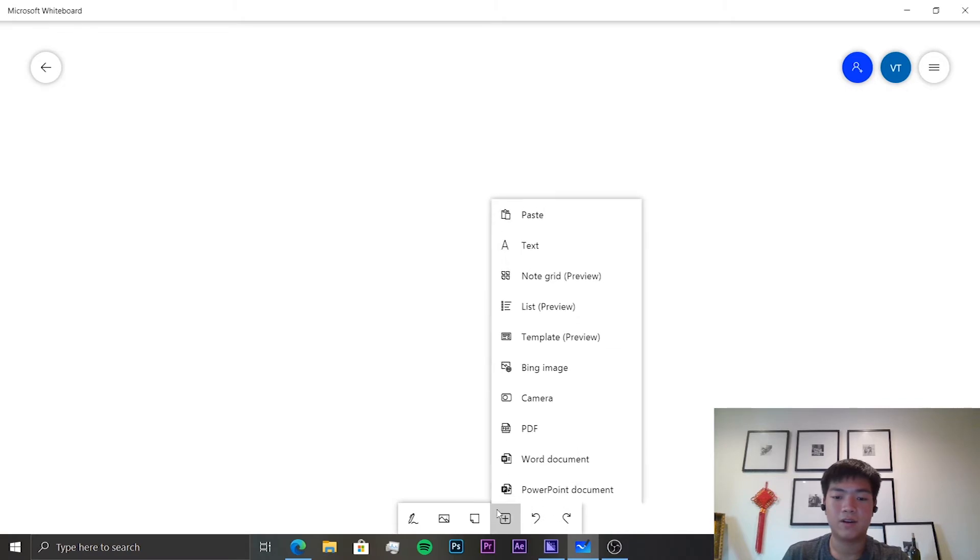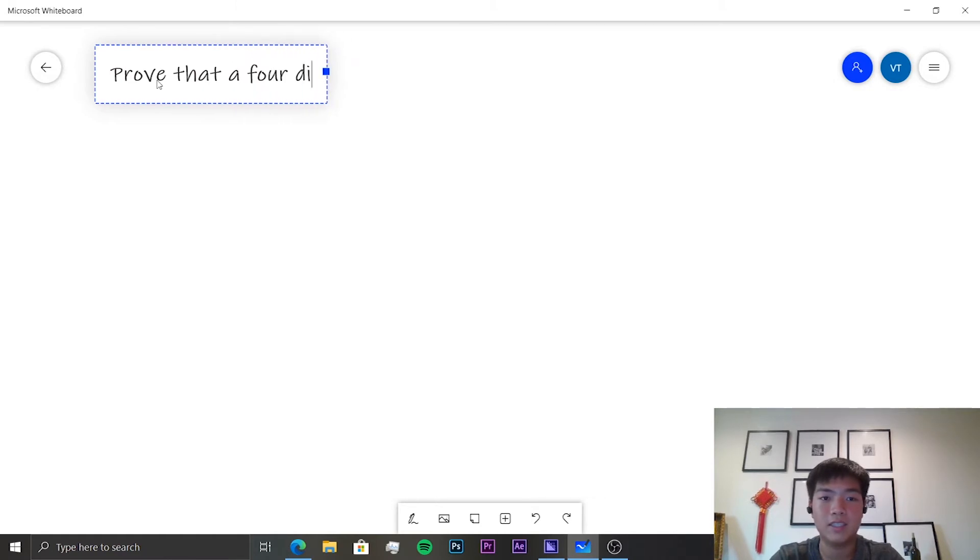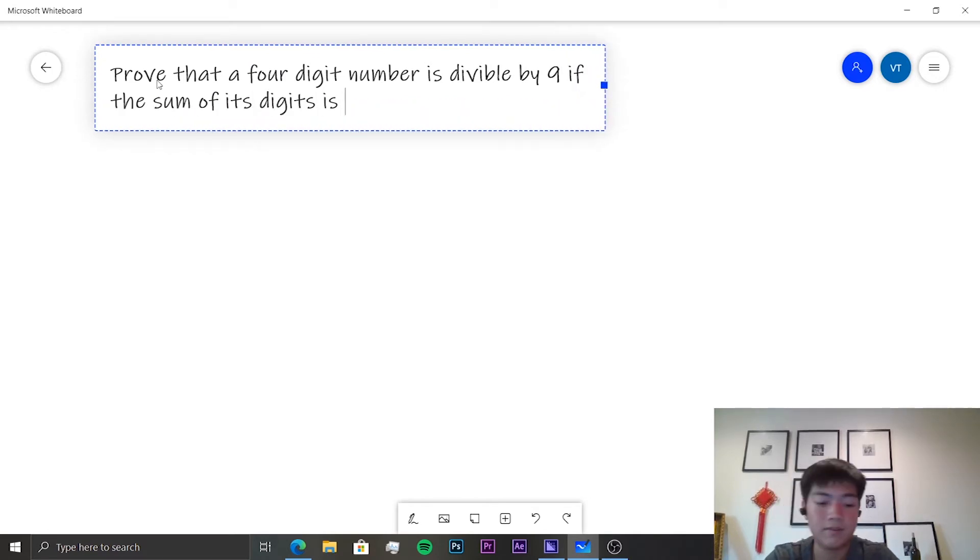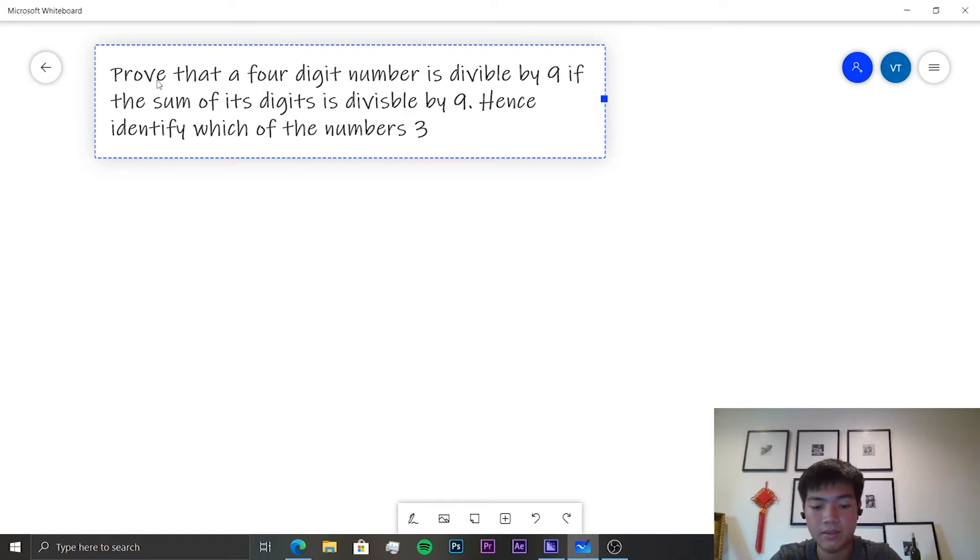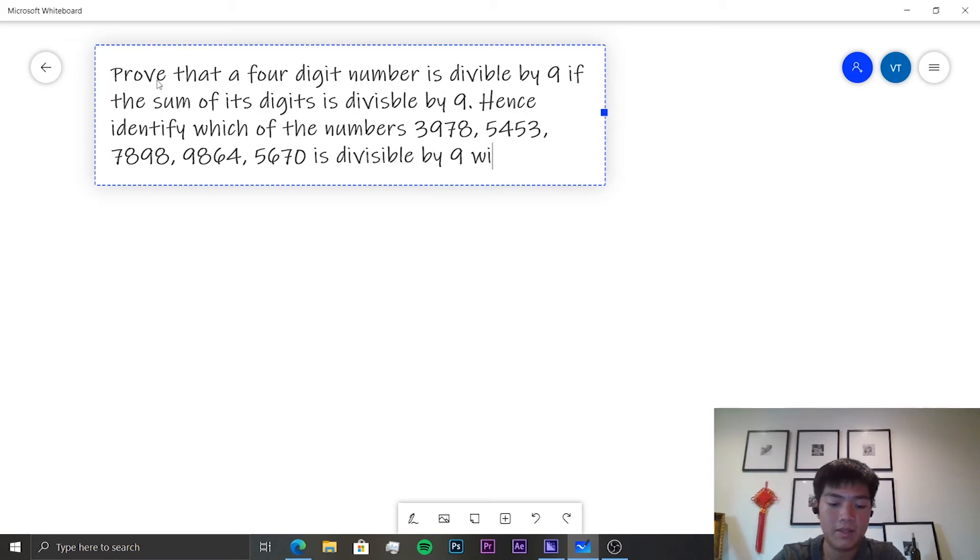For our next proof, we need to prove that a 4-digit number is divisible by 9 if the sum of its digits is divisible by 9. Hence, identify which of the numbers 3978, 5453, 7898, 9864, or 5670 is divisible by 9 without carrying out any division.